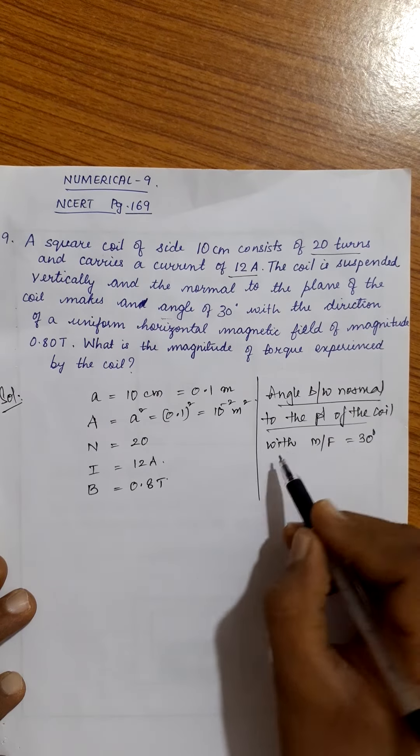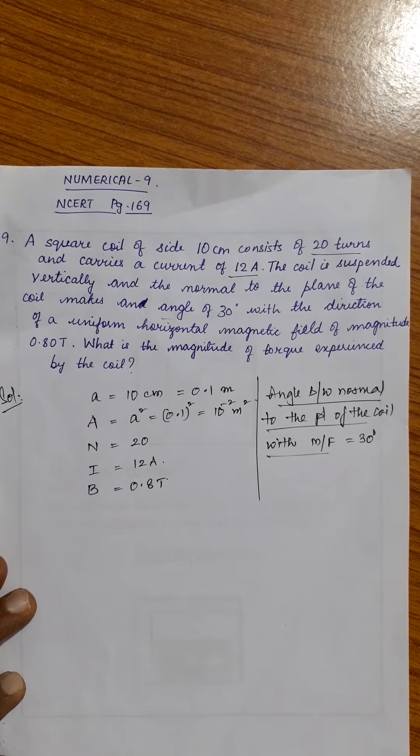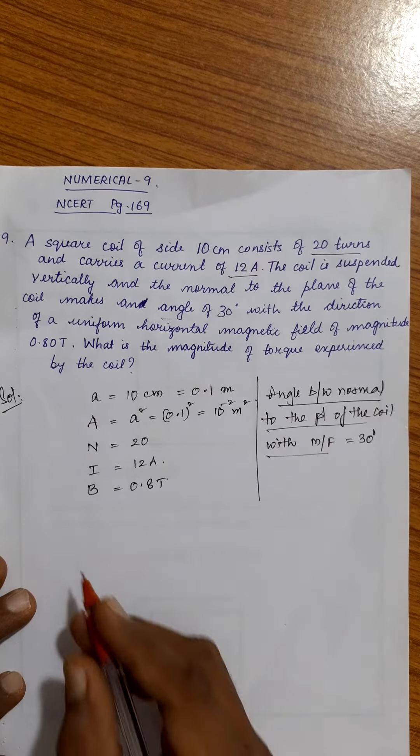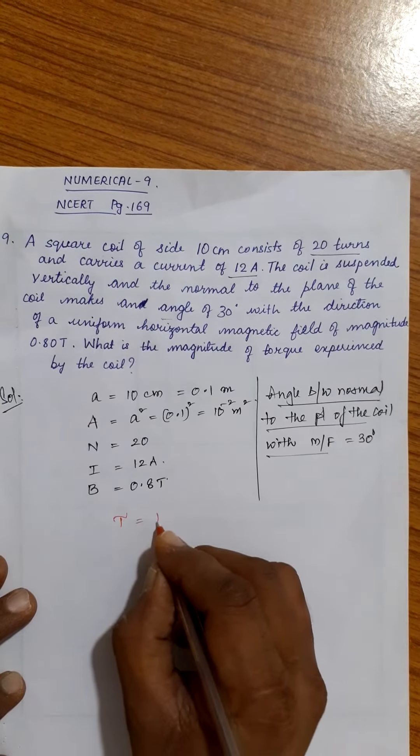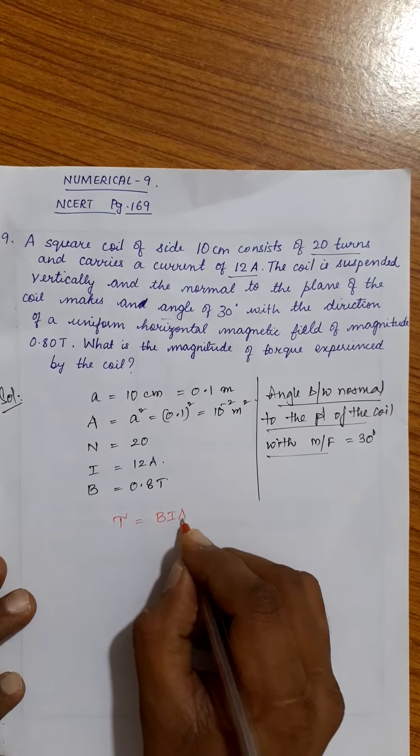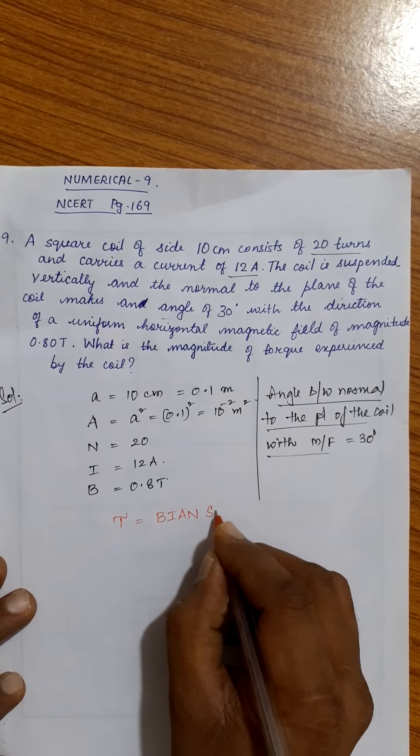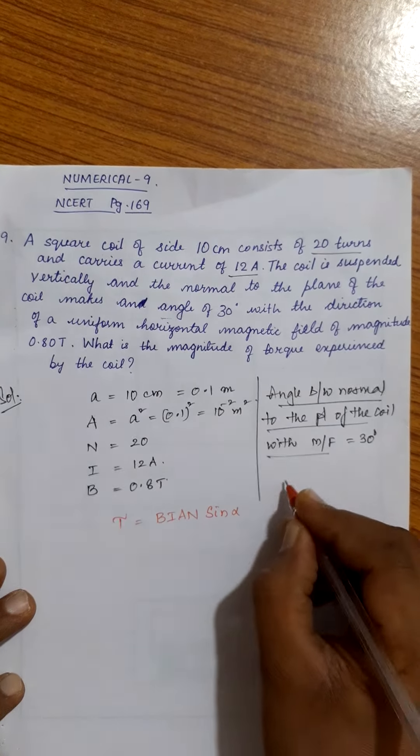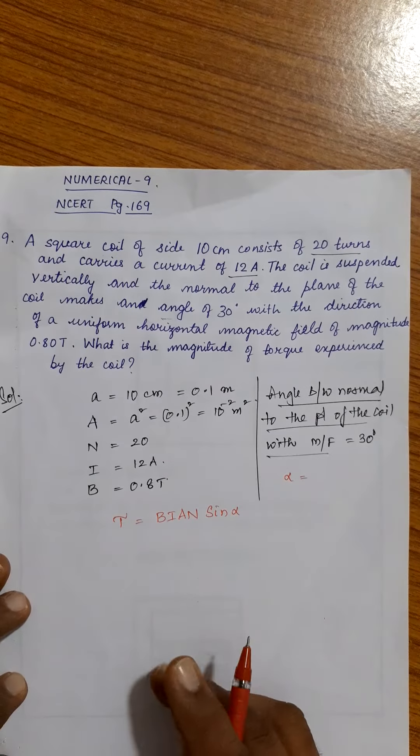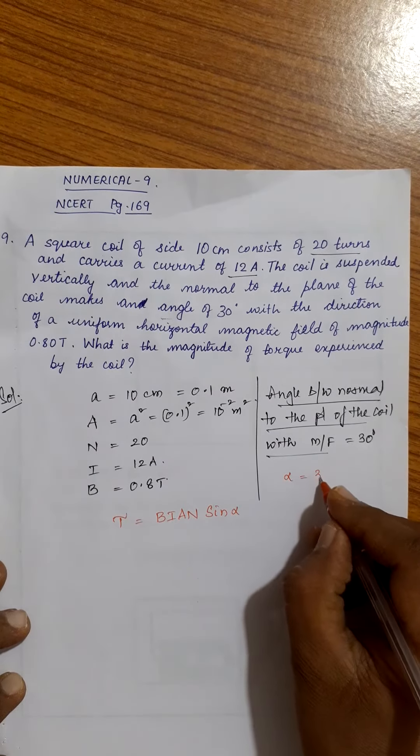When angle between normal to the plane of the coil with magnetic field is given, we have to go for the formula to find torque. Torque is equal to B I A N sine alpha, where alpha is the angle between normal to the plane of the coil and the magnetic field which is 30 degree.